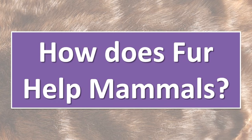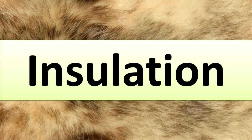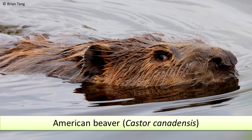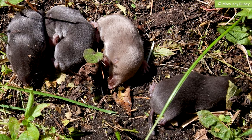How does fur help mammals? Fur provides several benefits for mammals. Insulation: fur can keep heat or coolness inside the mammal, and can also keep heat or cold from reaching the body, helping to maintain a stable body temperature at all times. Aquatic mammals like the American beaver trap air in their fur to conserve heat by keeping the skin dry. The white-tailed deer has hollow hairs that act as insulation and help it float when swimming. Voles have darker fur in winter to absorb more heat.